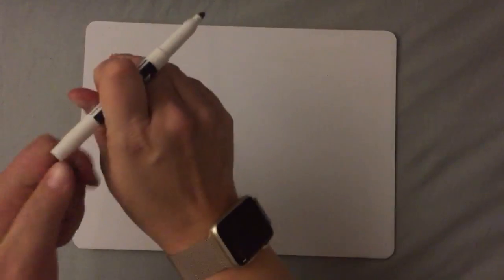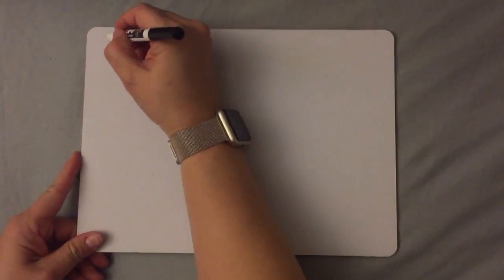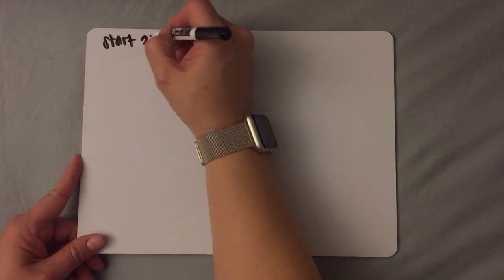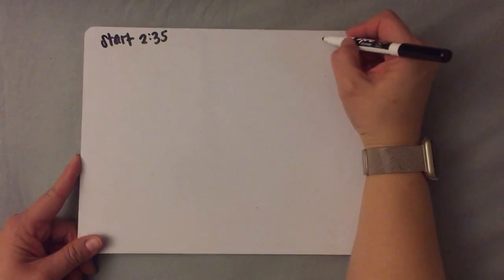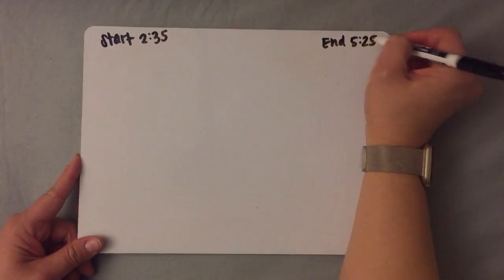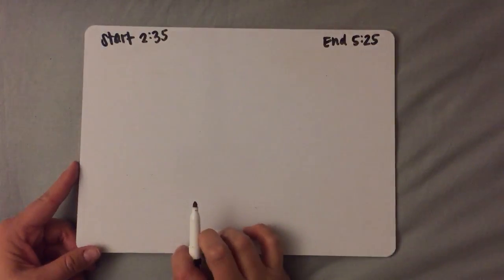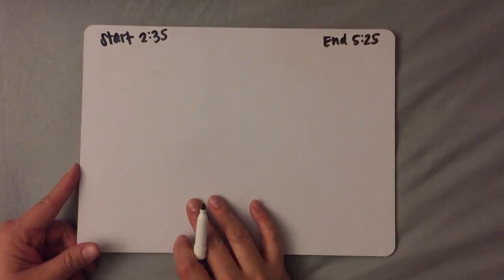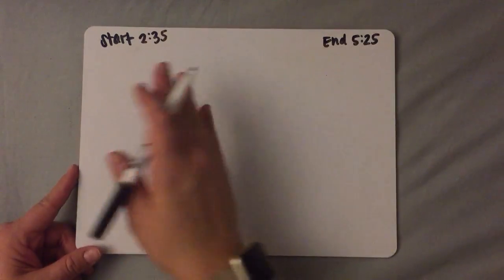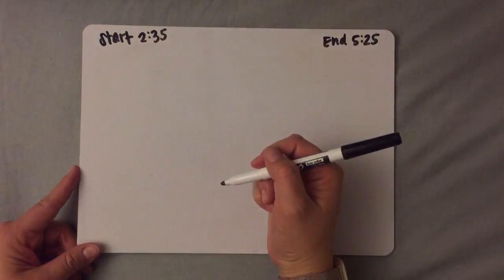So with the zoom method you still need to know the start time, and in this example I'm going to use 2:35 just like I used in my T-chart example, and I'm going to use the end time of 5:25 just like I did in my T-chart example. So when you know the start time and end time and you want to find out how much time occurred between the two, you're finding out the elapsed time.